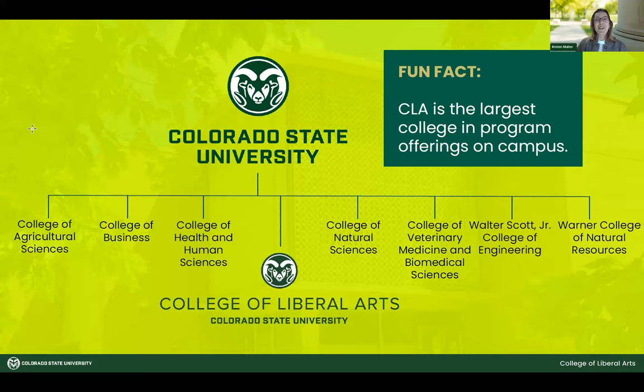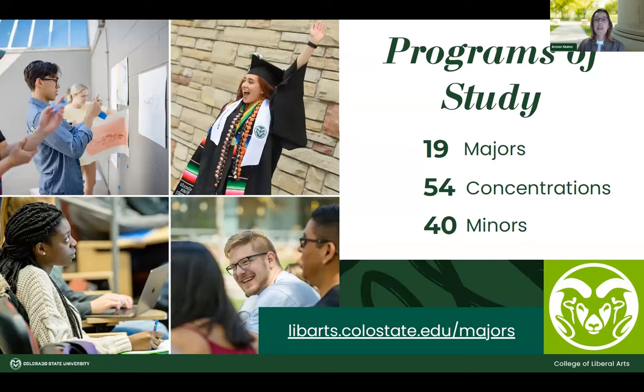Colorado State University is a large university divided into eight colleges. The College of Liberal Arts is the largest of the eight colleges in terms of what we offer. We have 19 majors, 54 concentrations — which are more specific things you can get into within your major — and 40 minors, which are extra subjects that you can add on to your major.